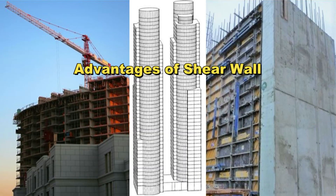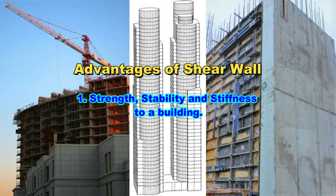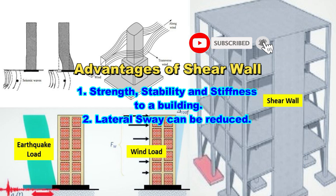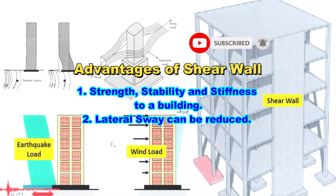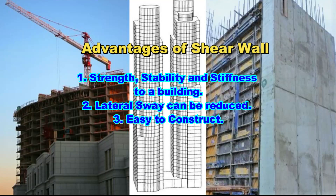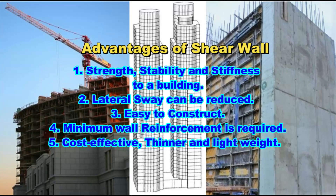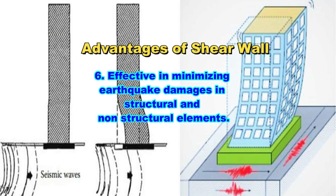The advantages of providing shear wall: shear walls provide more strength, stability, and stiffness to the building. By providing a shear wall, lateral sway of the building can be reduced. Shear walls are easy to construct and can be easily implemented at site. Minimum wall reinforcement is required in case of RCC shear wall. Shear walls can be constructed very fast and are cost effective. Shear walls are thinner walls, hence they are lightweight. Shear walls are also effective in minimizing earthquake damage in structural and non-structural elements.